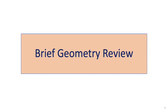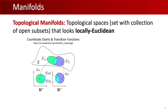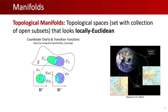Let's first review some basic geometry concepts. A topological manifold is a topological space which is simply a set with a collection of open subsets that locally looks Euclidean. For every open subset we can find a map called a coordinate chart that maps it to the flat Euclidean space. The collection of all charts covering a manifold is called an atlas — a familiar example being the atlas of the surface of Earth.